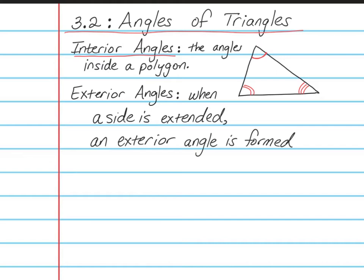For exterior angles, when a side is extended, an exterior angle is formed. So for example, if I were to extend this side out right here, you can see that I created an exterior angle right here. Any of these sides can be extended — if I extend this one here, then we have this exterior angle formed. Or if I extend this side up here, then I have this exterior angle formed. So an exterior angle is formed when you extend one or more of the side lengths out past the polygon itself.